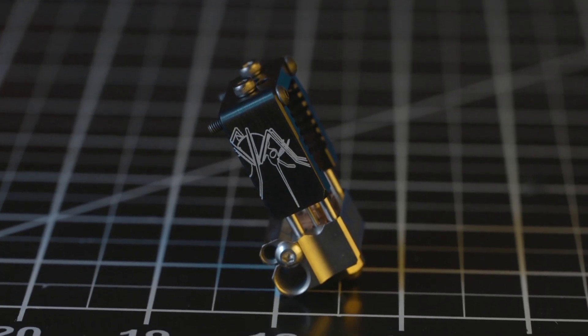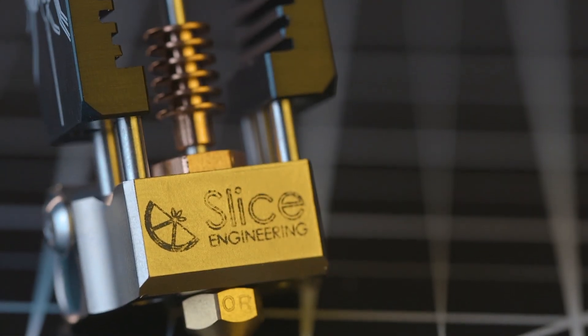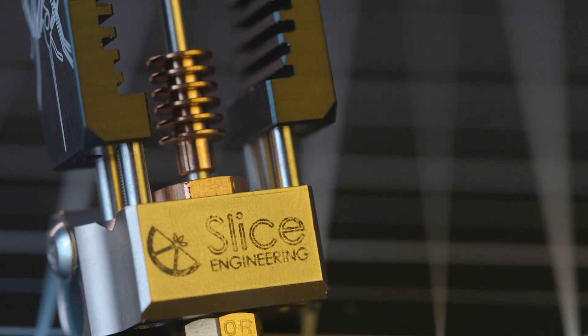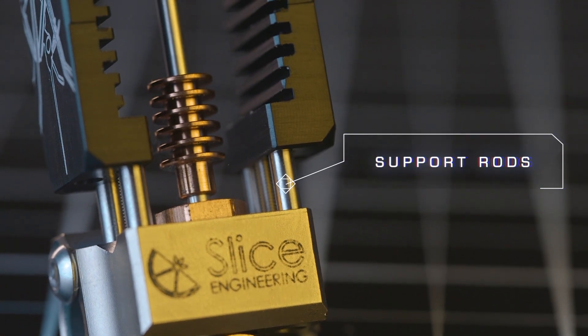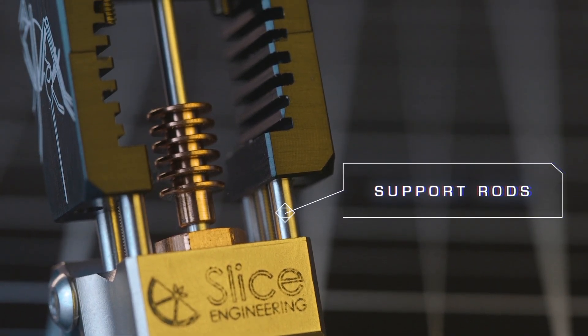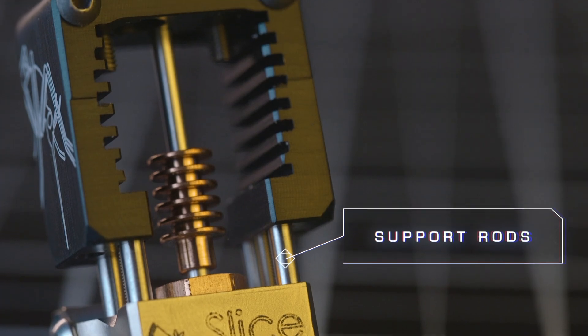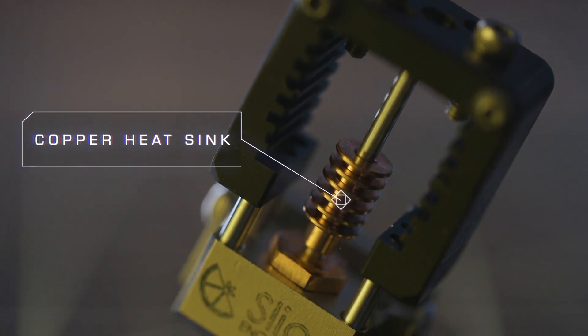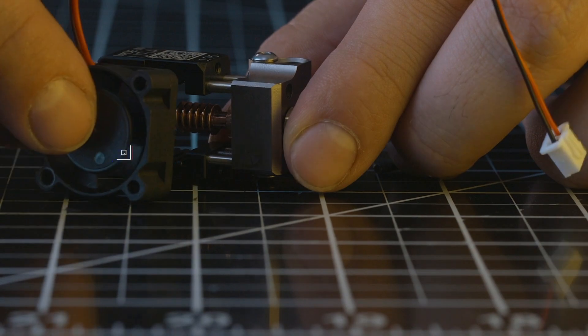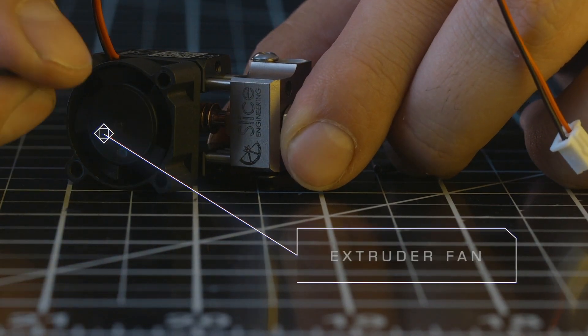At the core of the Mosquito hotend is a separated module design. The frame at the cold end, which feeds the filament down, is separated entirely from the heater block by four metal support rods. This creates a spacious air gap between the two modules, where a small copper heat sink guides the filament down into the heater block, and a small mounted fan keeps just the right amount of air flowing through.